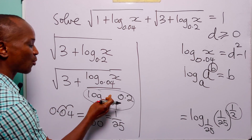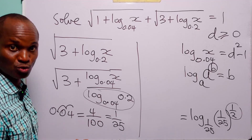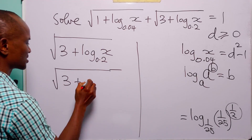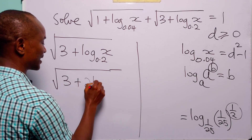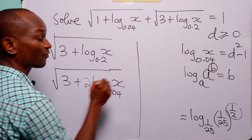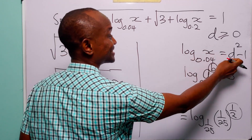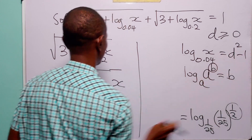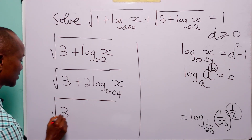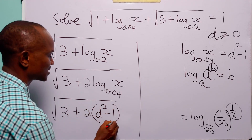So this second term becomes the square root of 3 plus 2 multiplied by log base 0.04 of x. Since log base 0.04 of x equals d squared minus 1, this becomes the square root of 3 plus 2 times (d squared minus 1).